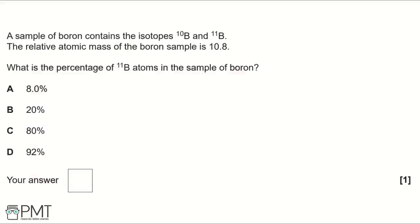A sample of boron contains the isotopes ¹⁰B and ¹¹B. The relative atomic mass of the boron sample is 10.8. What is the percentage of ¹¹B atoms in the sample of boron? A: 8%, B: 20%, C: 80%, or D: 92%.